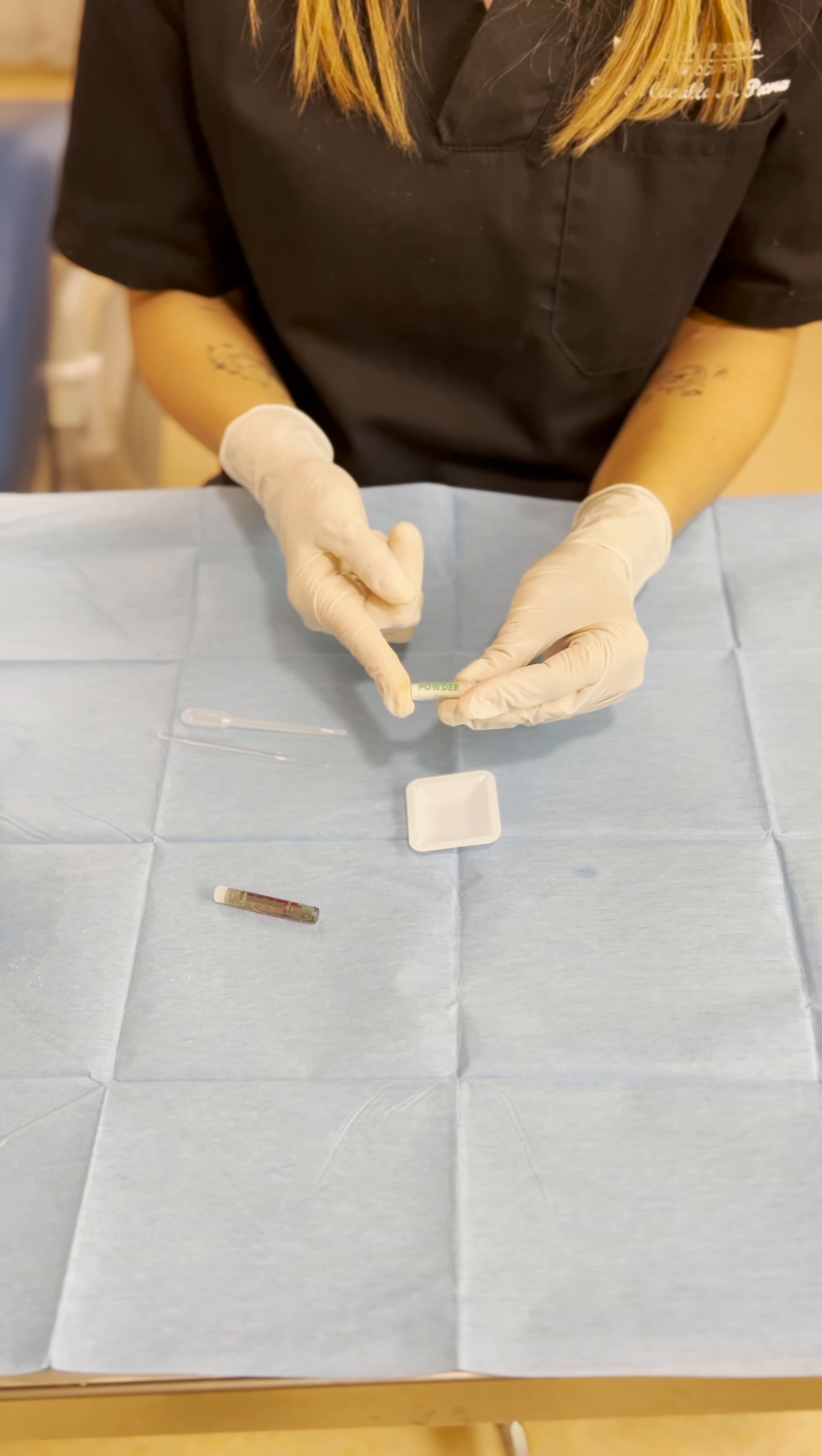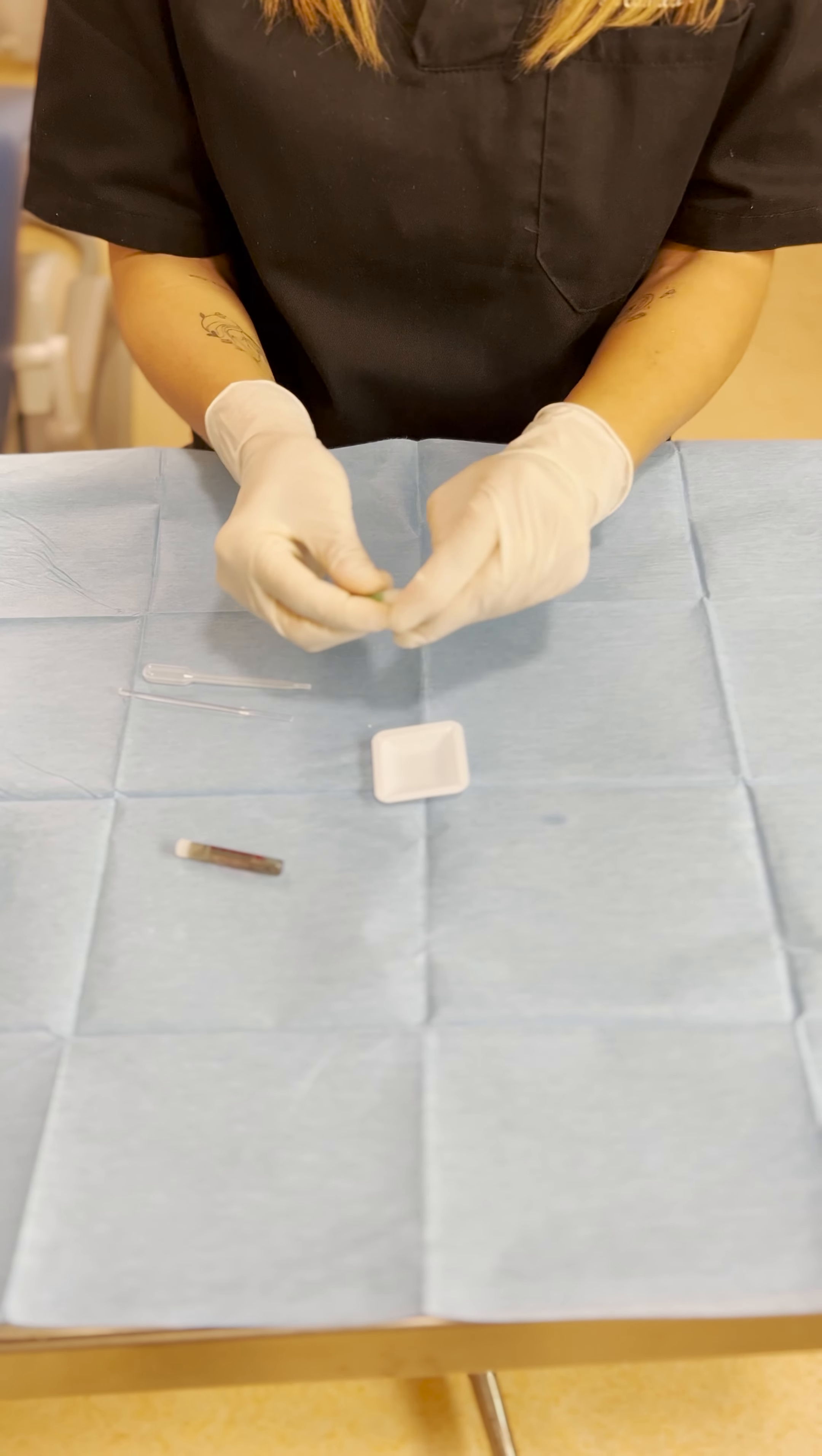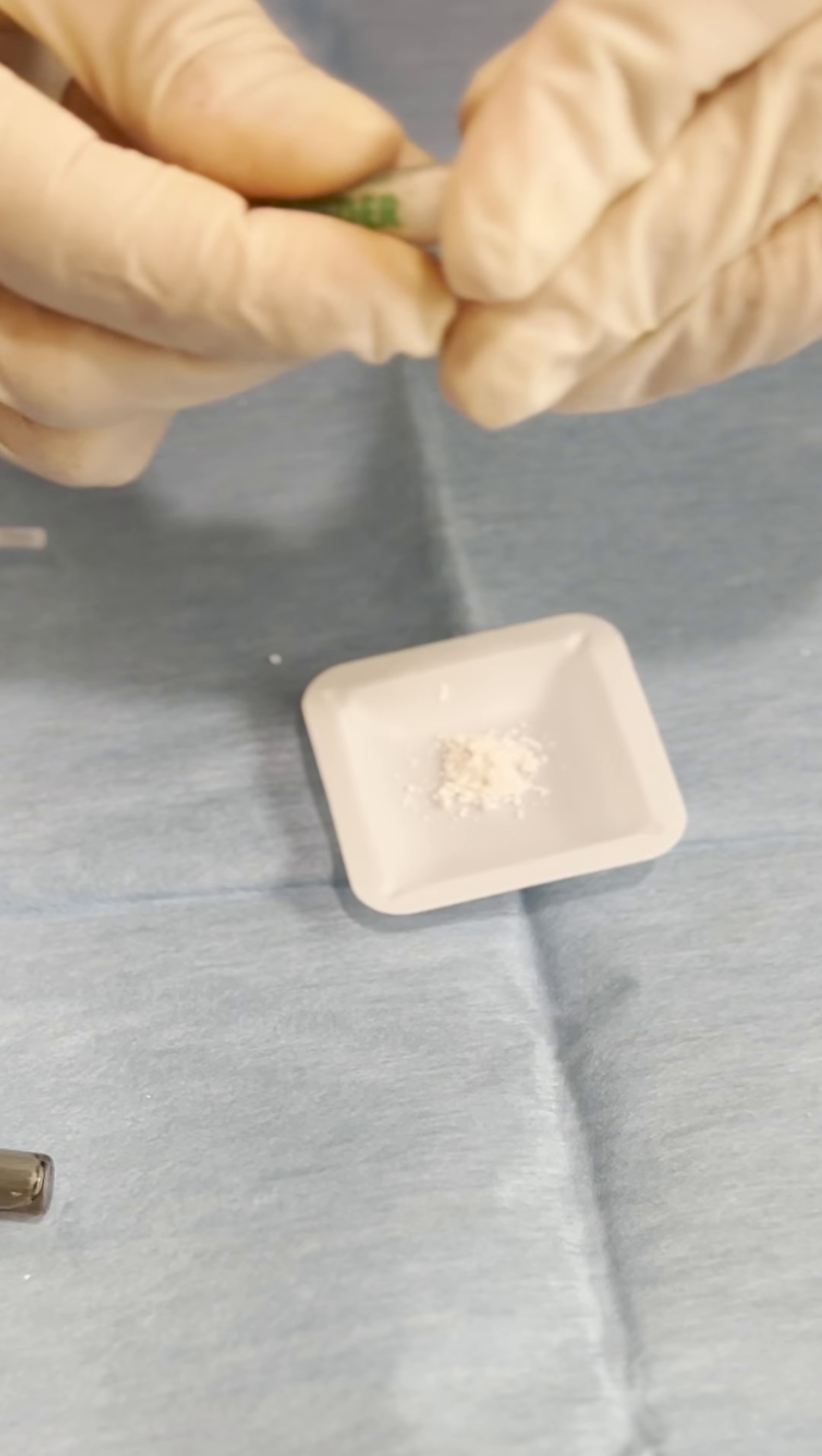Okay so this is the little vial with the powder and we can use it as a membrane on top of the defects to seal the granules inside especially if we don't want to use membranes or collagen on top of the defect.